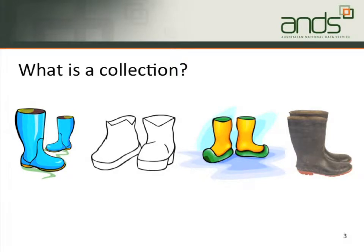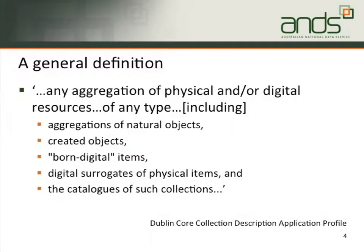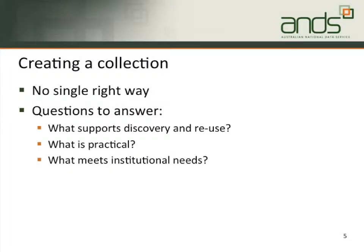The issue of what a collection is, is actually not all that straightforward. This is a definition that has been used - I've just abstracted out the bits that are slightly useful. You can see it's too generic to be of practical value when you're actually implementing something at a software level. Basically anything can be an aggregation. This one's out of the Dublin Core collection description application profile, but again this isn't going to help us as much as we would have hoped. We've discovered from working with our early adopters that there isn't actually a single right way of saying what a collection is.